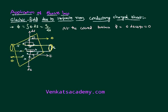Now let us consider the circular surfaces. Here also, if I take a small surface area element, it is radially outward, and the electric field is also radially outward. So on the right side, E and dS are both pointing outward. On the left side, the charges are positive so the electric field is radially outward, and the surface area element is also radially outward. At the circular caps, electric flux is E dS cos 0°, which equals E dS.